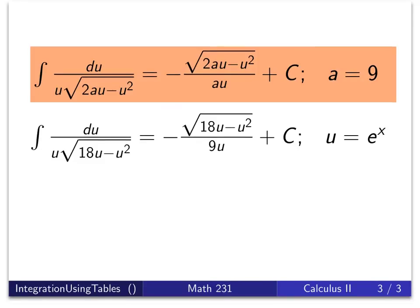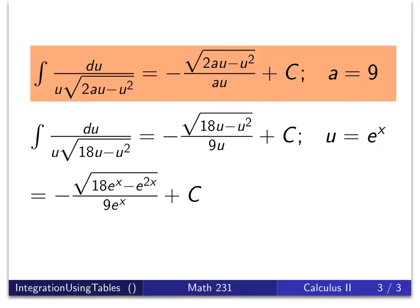Now we need to keep in mind that u is equal to e to the x. All we do is substitute. And we'll get 18 e to the x minus e to the 2x all over 9 e to the x plus c.